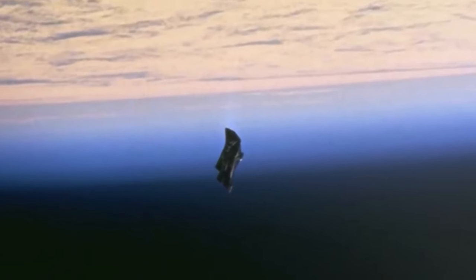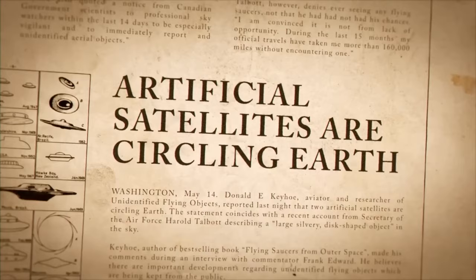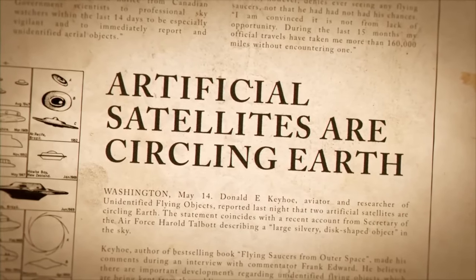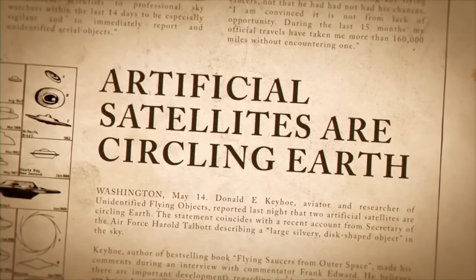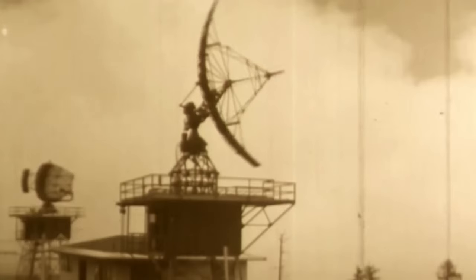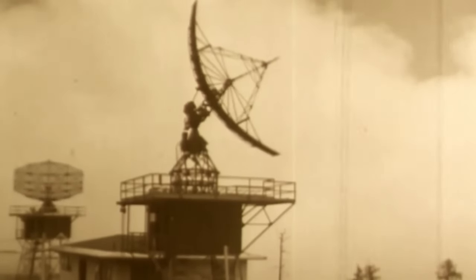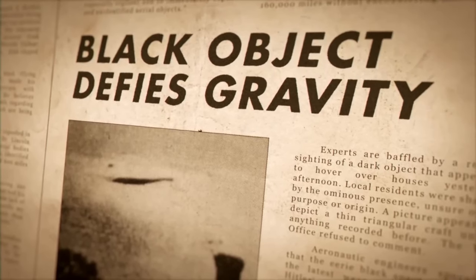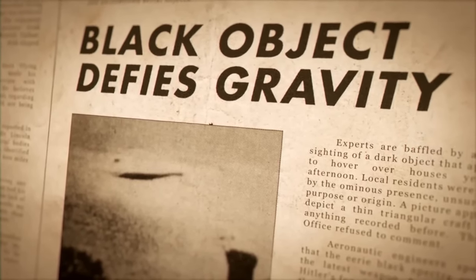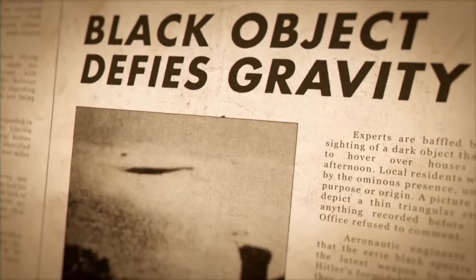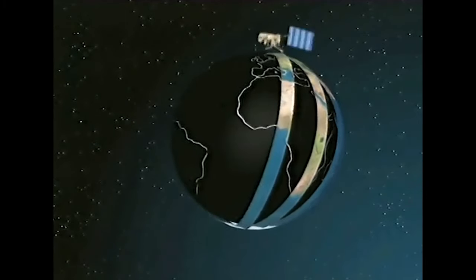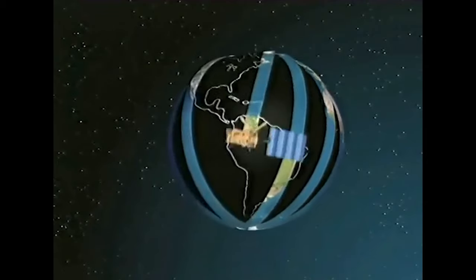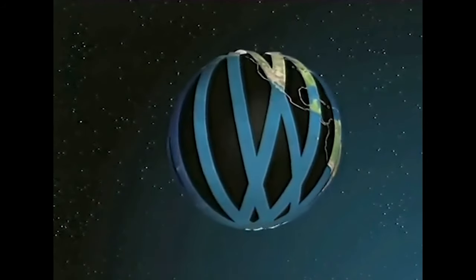The concept of an unidentified object orbiting Earth began to take shape in public consciousness, fueled by these early accounts. However, it wasn't until the mid-20th century that the narrative of the Black Knight satellite truly began to form. Reports from the 1950s and 60s added to the intrigue with claims of an unknown object detected in polar orbit around Earth, an orbit that at that time neither the United States nor the Soviet Union had the technology to achieve.